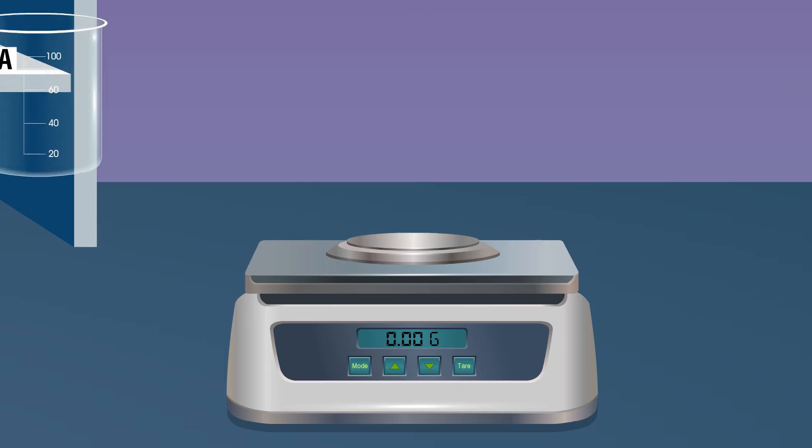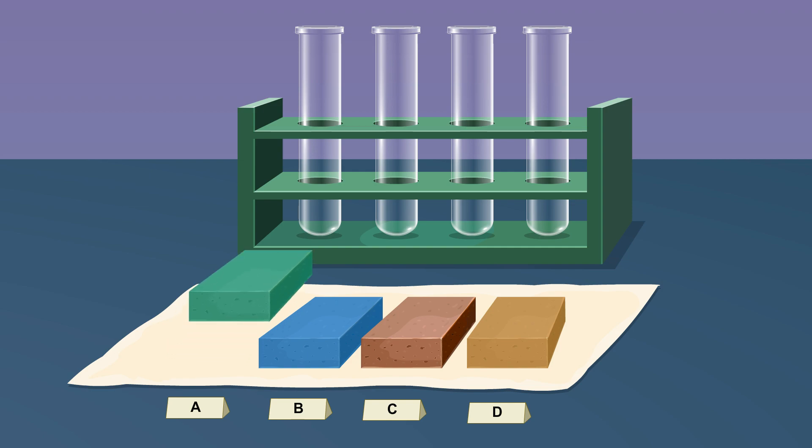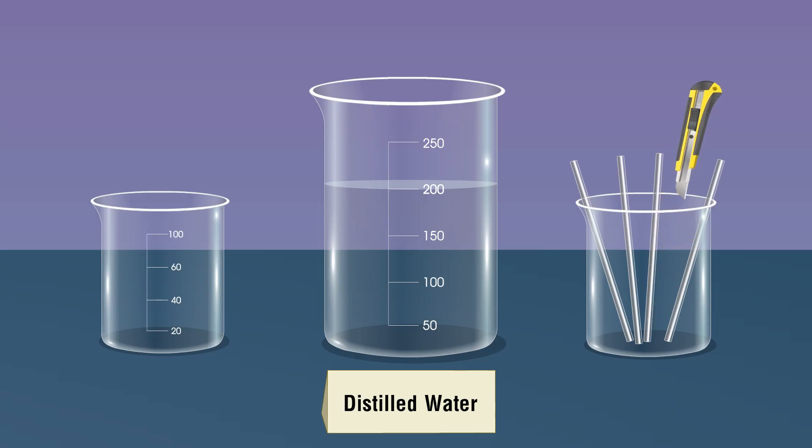Take beaker A, put the A beaker on the electronic weighing balance. The weighing balance shows the weight of the empty beaker. Use the tare button to show a reading 0.00 gram and add soap A into the beaker by making it a small piece using a cutter knife.